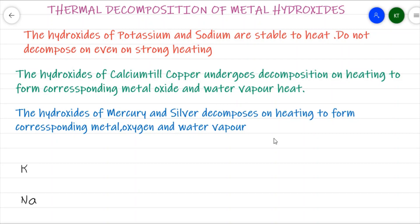Let us discuss the thermal decomposition reaction of metal hydroxides. Generally, the hydroxides of sodium and potassium are stable to heat — even if you heat them very strongly, they do not undergo any kind of decomposition. But the hydroxides from calcium till copper, when heated, give the corresponding metal oxide as well as water vapor.